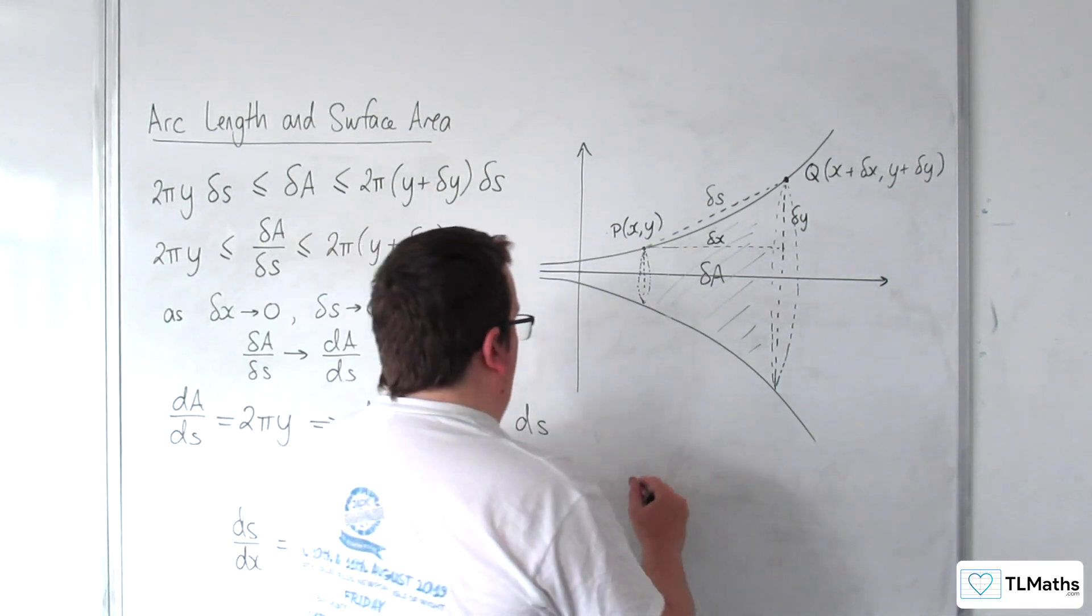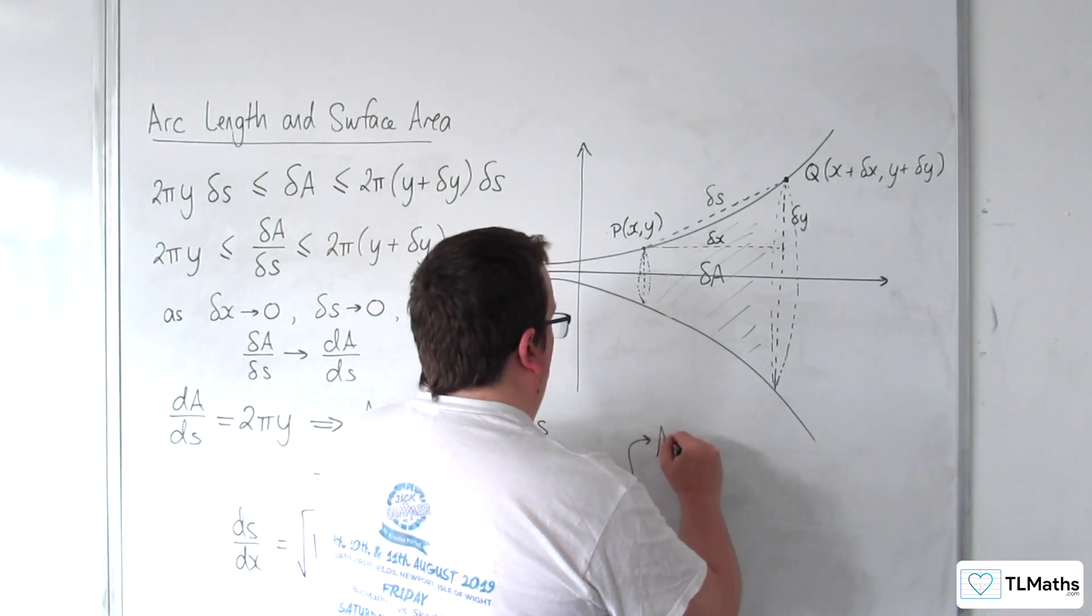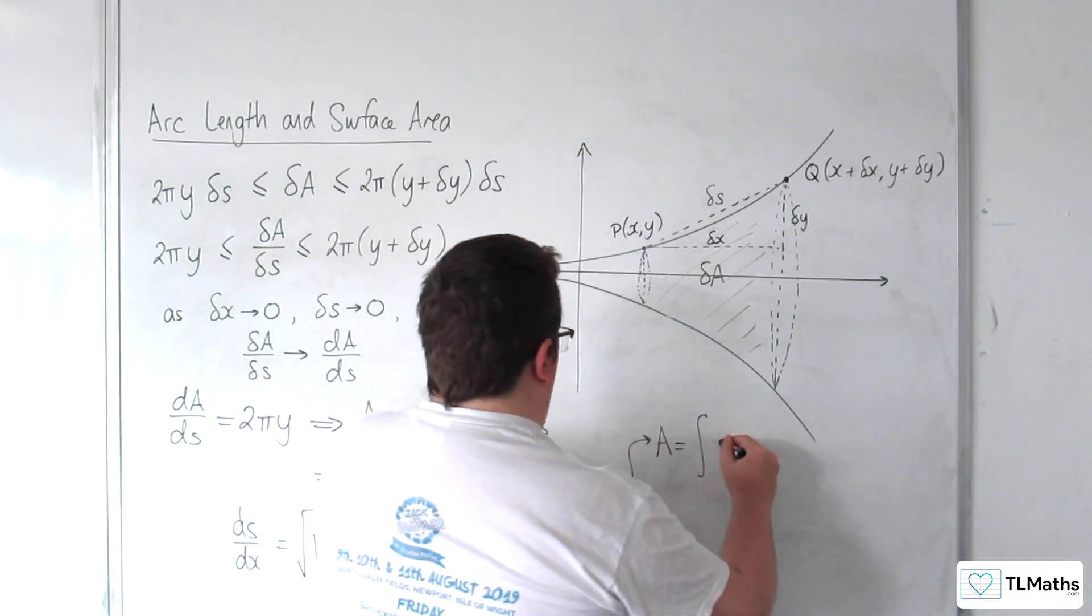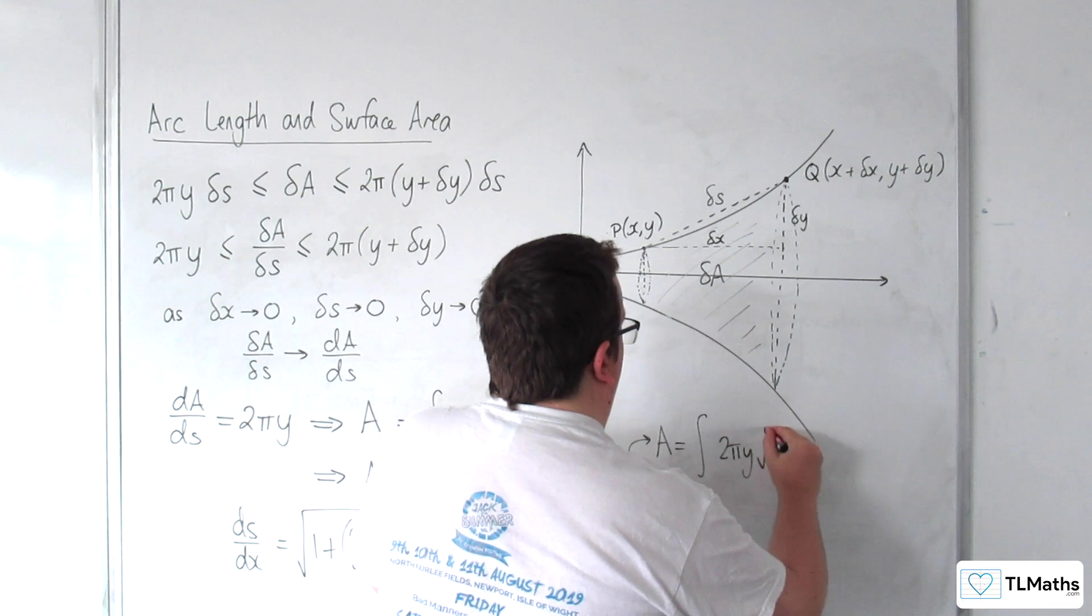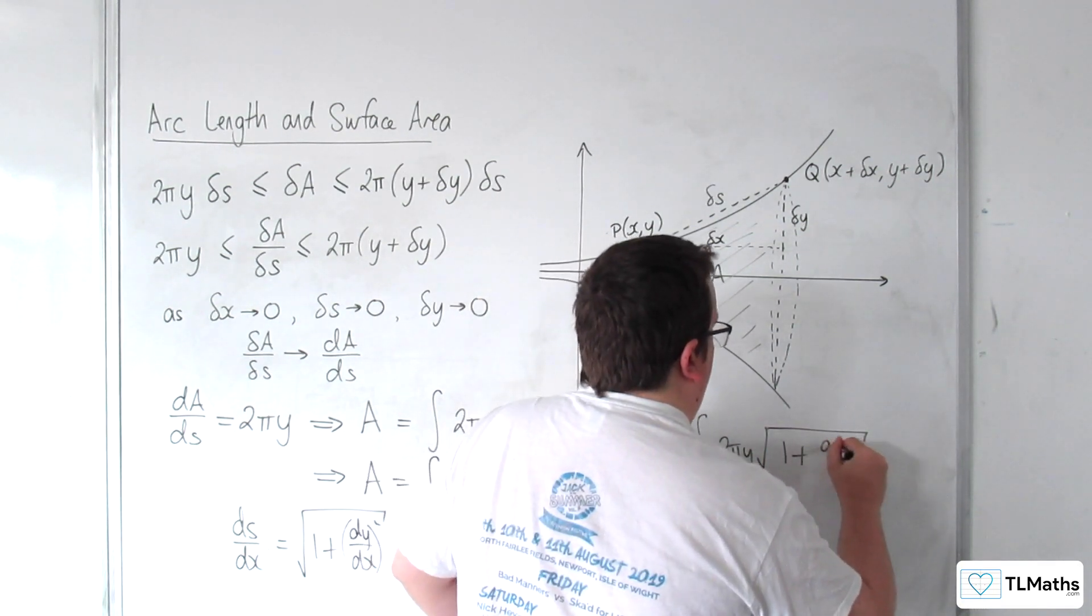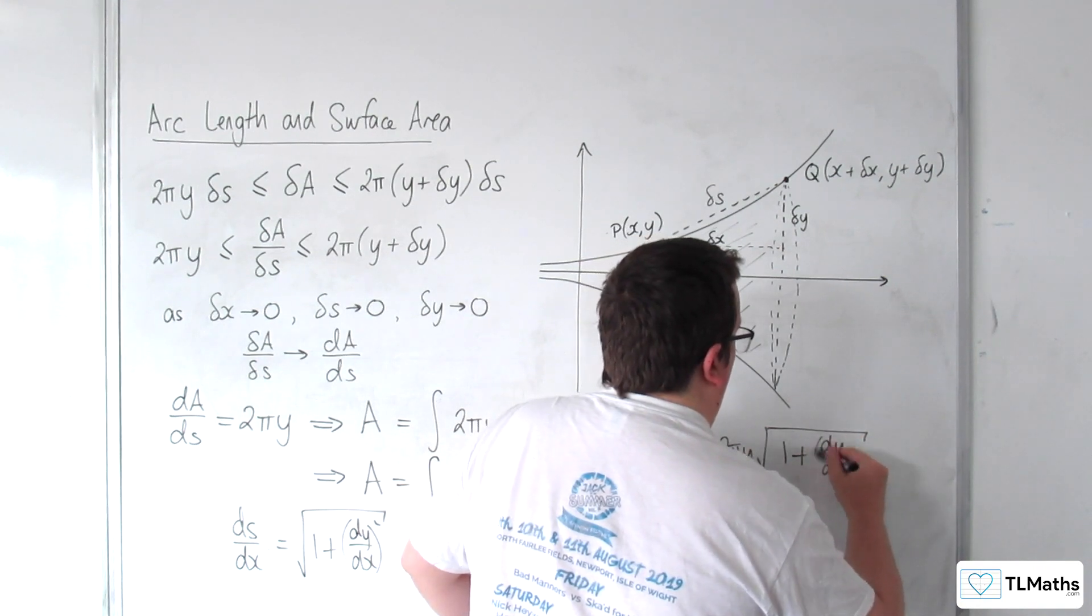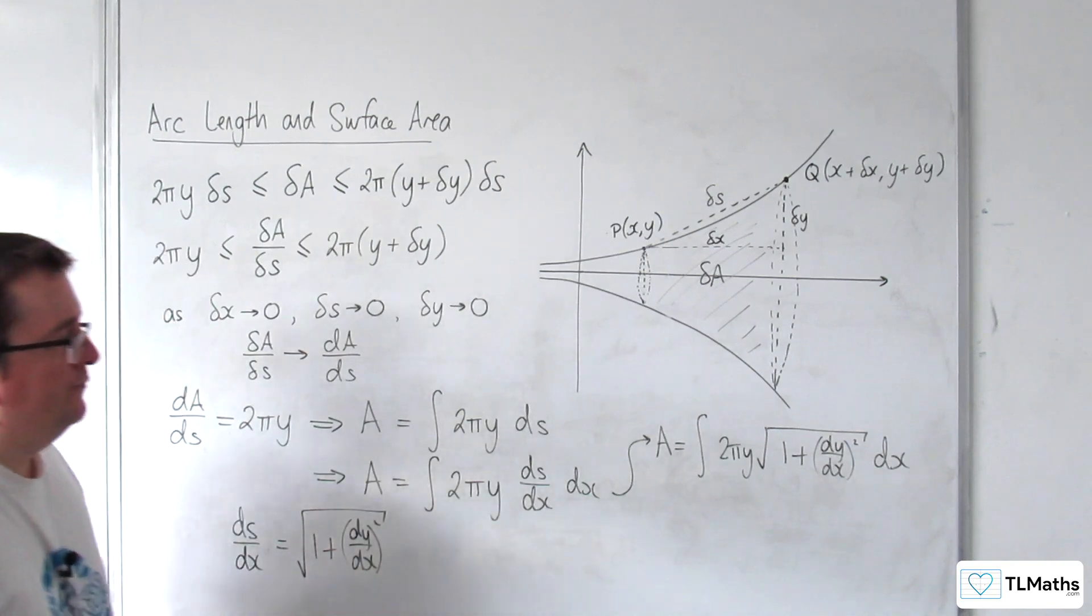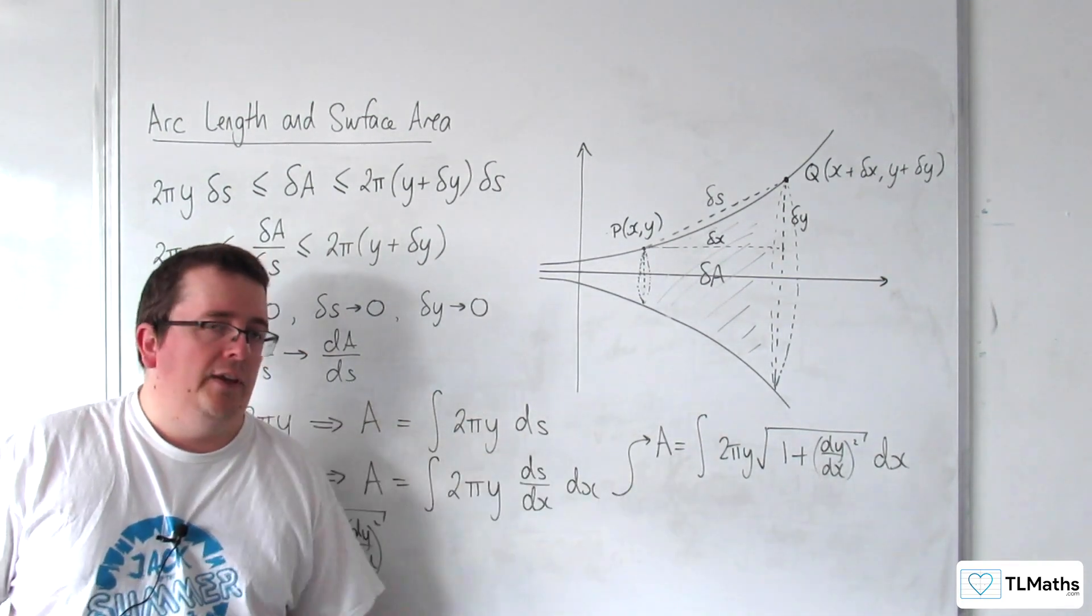So in Cartesian form, we can write that the area is equal to the integral of 2πy times the square root of 1 plus (dy/dx)² dx. So that's what it would be in Cartesian form.